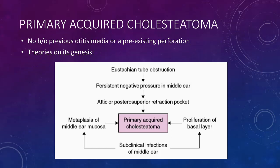Primary acquired cholesteatoma is a type of acquired cholesteatoma wherein there is no history of previous otitis media or pre-existing perforation. The theories for its genesis include, first, invagination of pars flaccida. This happens due to Eustachian tube obstruction that causes persistent negative pressure in the middle ear. Due to this, there is invagination of pars flaccida to create a retraction pocket, which leads to the formation of cholesteatoma due to collection of keratin debris in the retraction pocket.